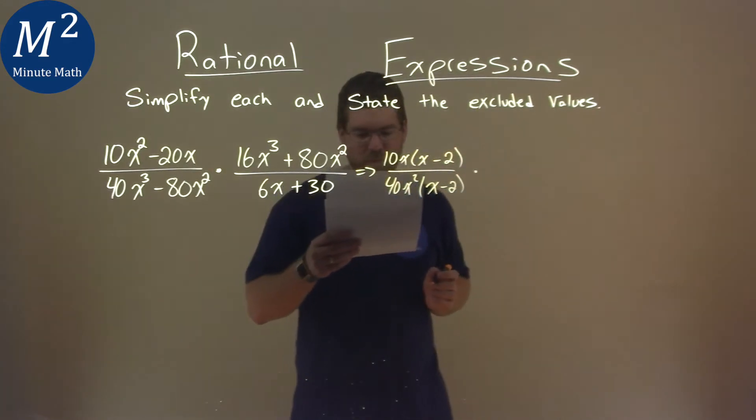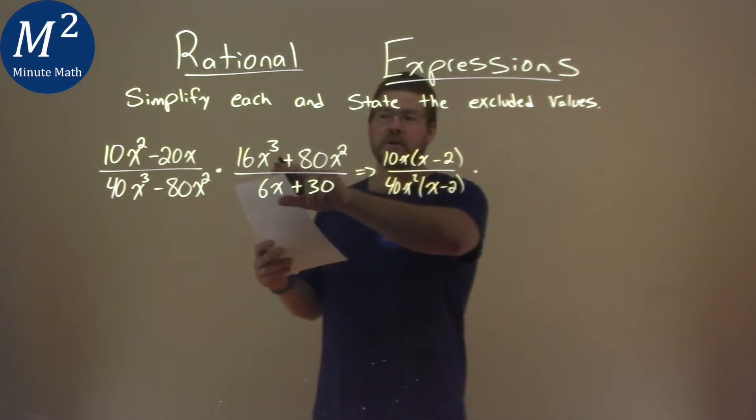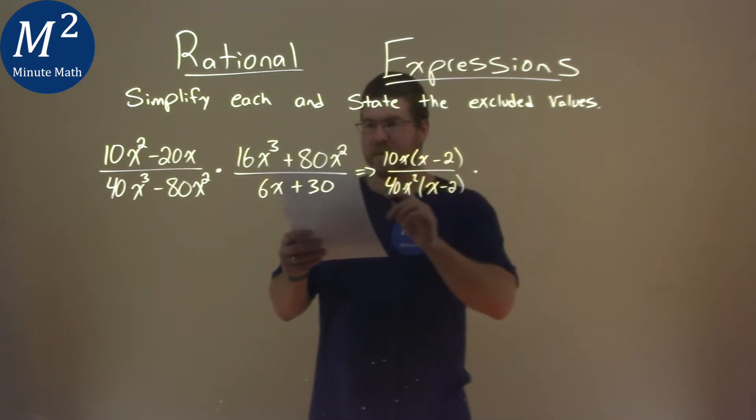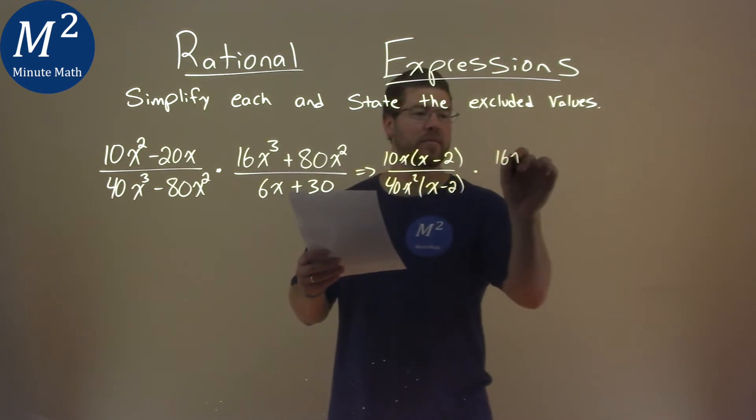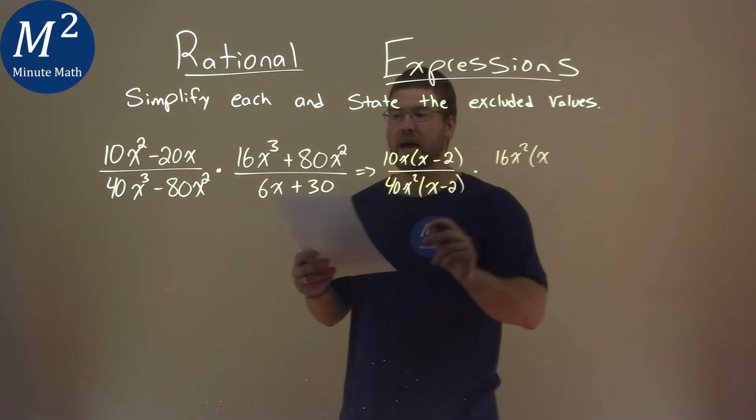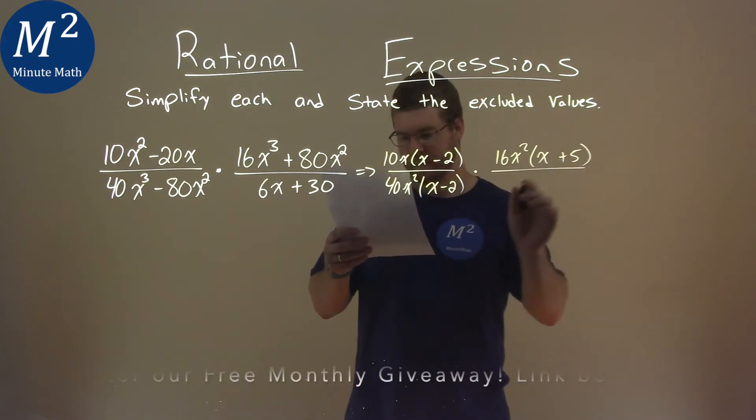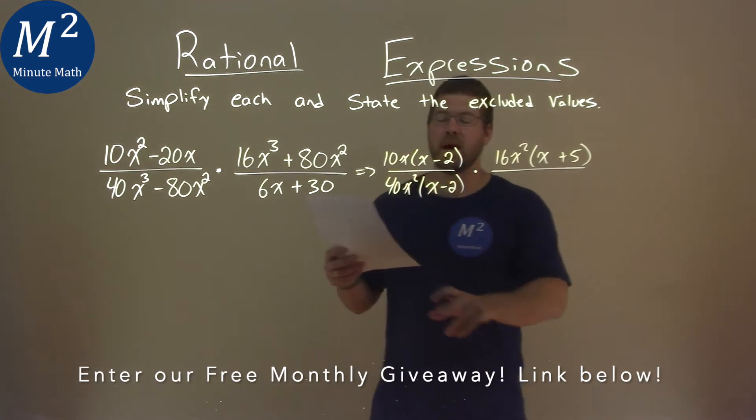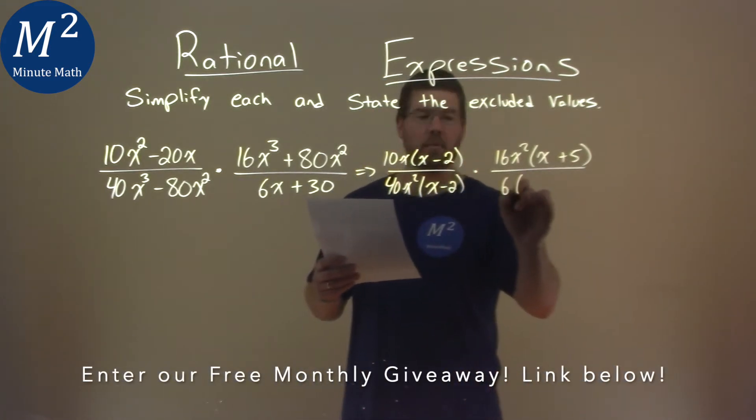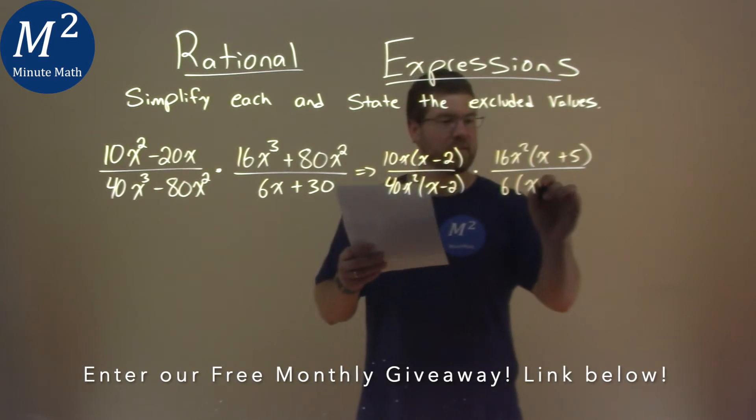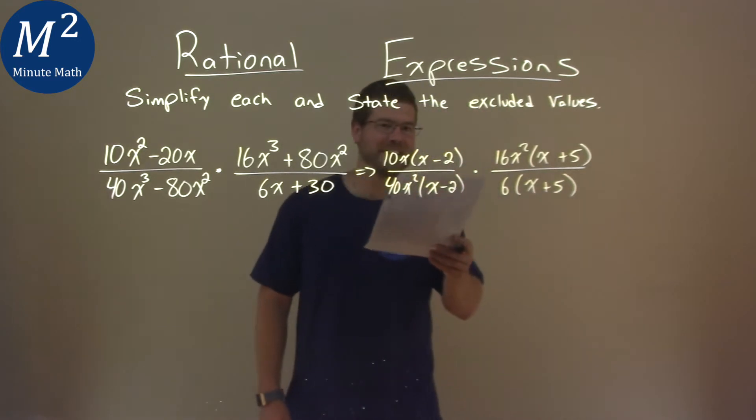Now we're being multiplied, or going to multiply. Again, we want to factor out that numerator, and we can pull out here a 16x squared. Goes into both parts. Pull out a 16x squared. We're left with an x plus a 5. Denominator, same thing. We're just going to pull out a 6 here, and we have an x plus a 5. So I'm just double-checking making sure I got them all. I did.